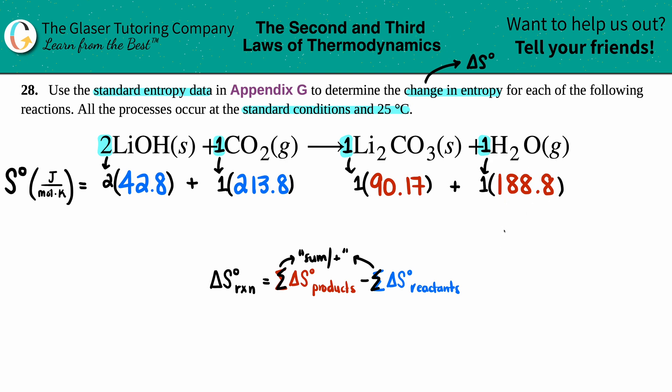Let's get those total values up. So I'm going to do the reactant side first: 42.8 times 2 plus 213.8, and I get 299.4. So 299.4.